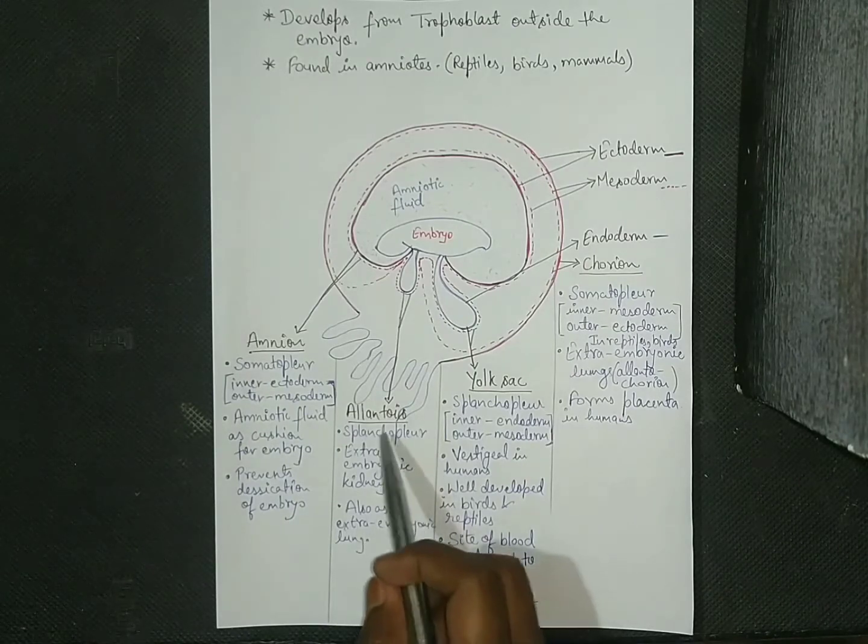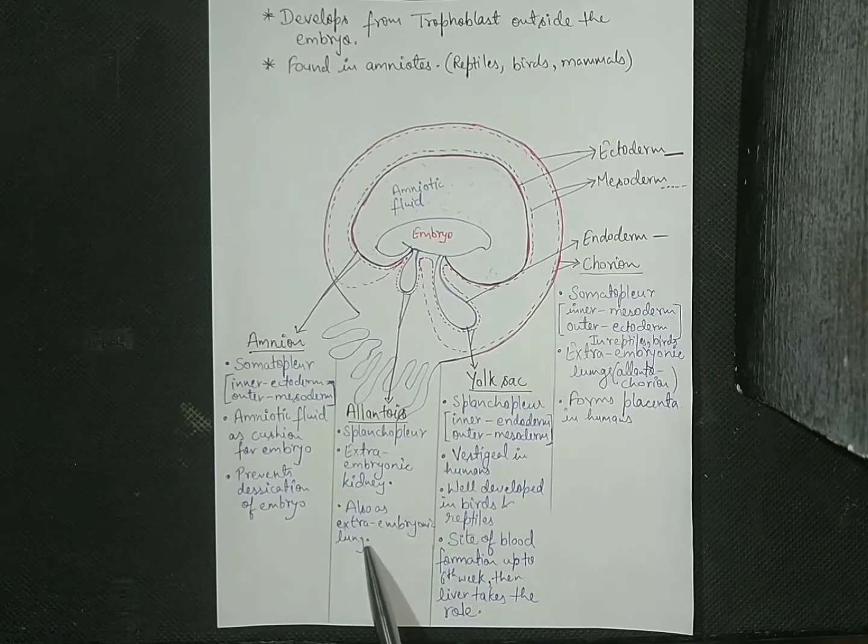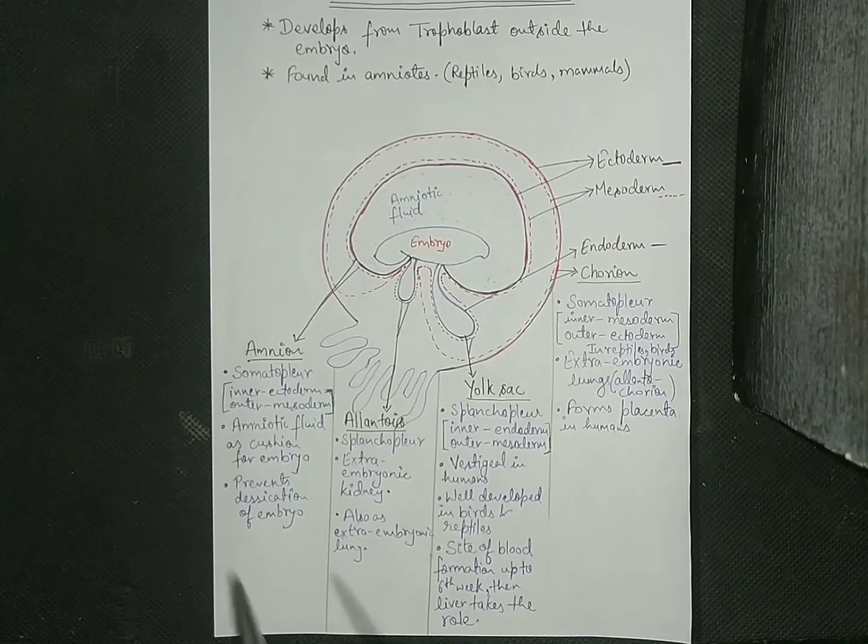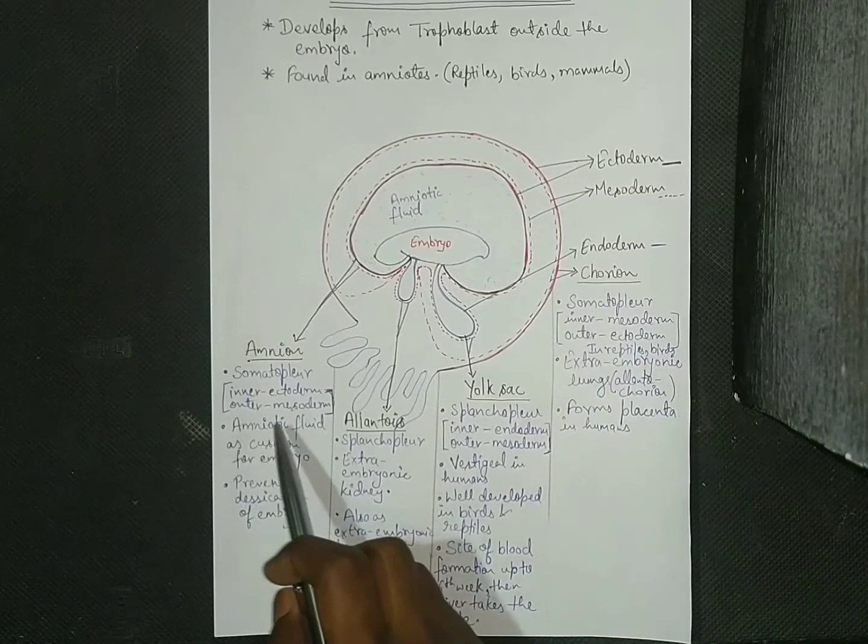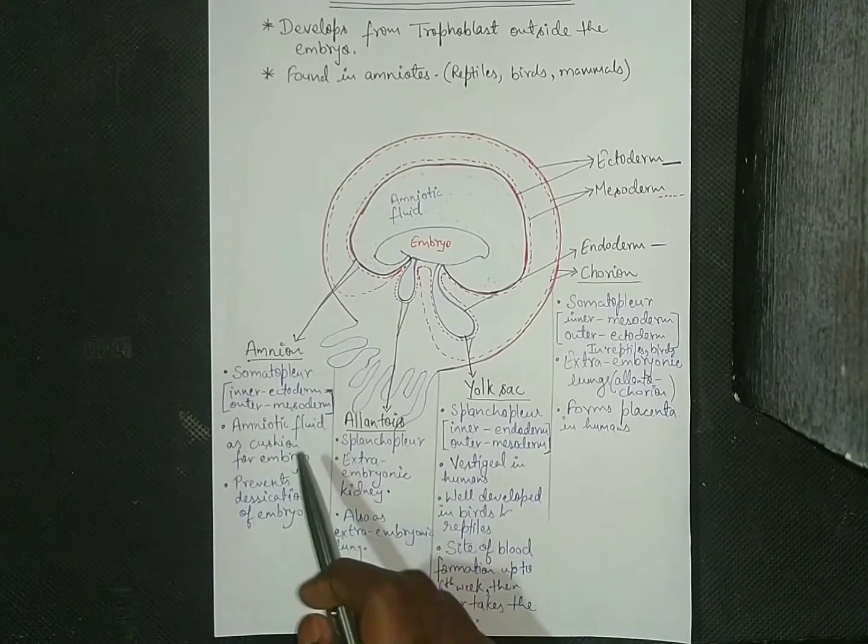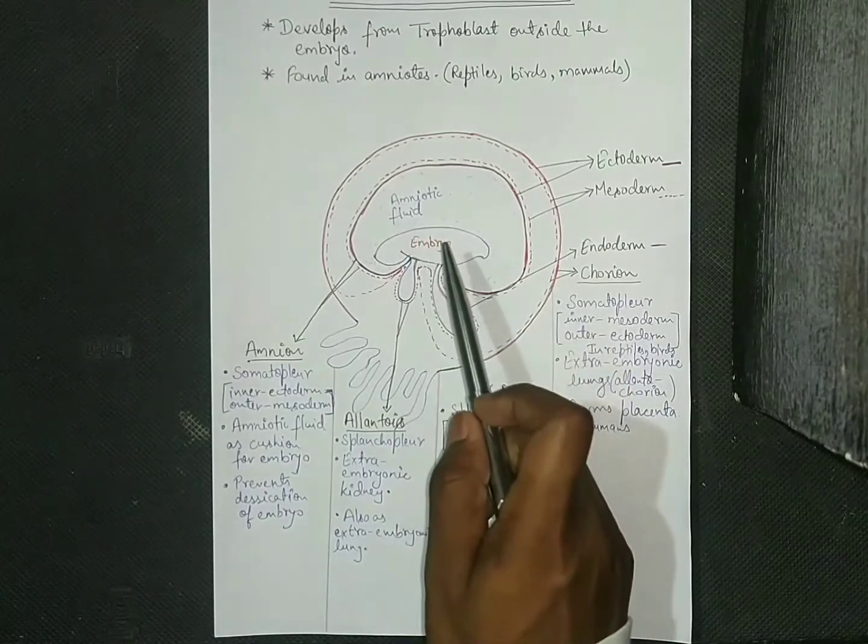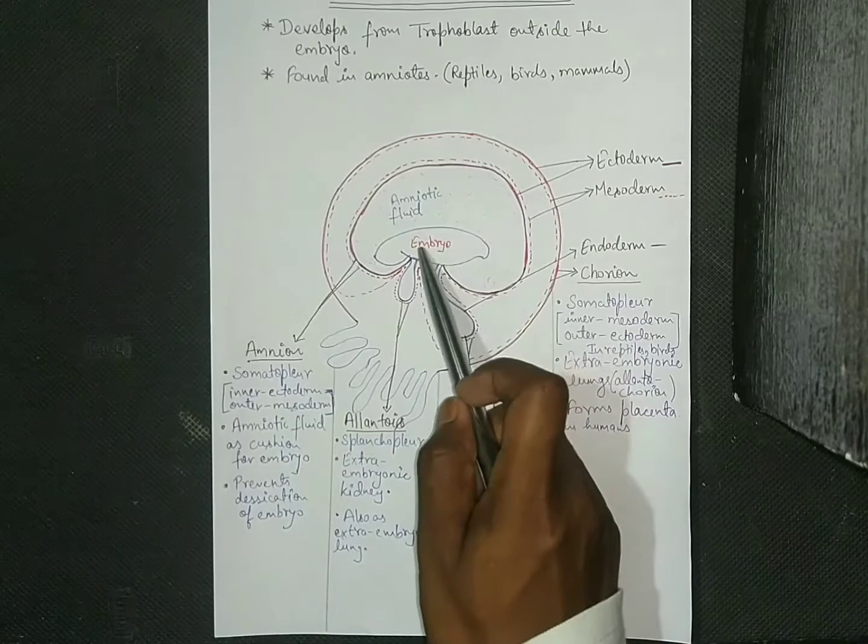The last extra embryonic membrane is amnion, and it is the fold of somatopleur. It means that the inner membrane is ectoderm and the outer membrane is mesoderm. It consists of amniotic fluid that acts as a cushion for embryo and protects the embryo.